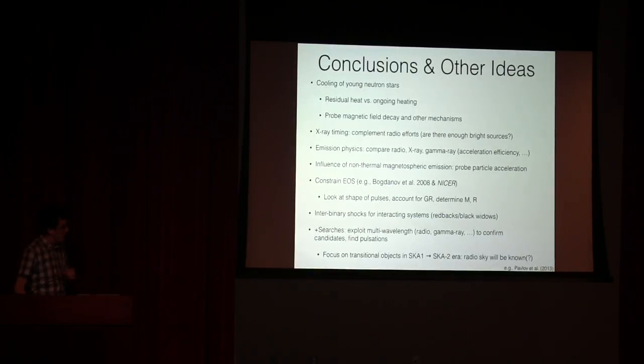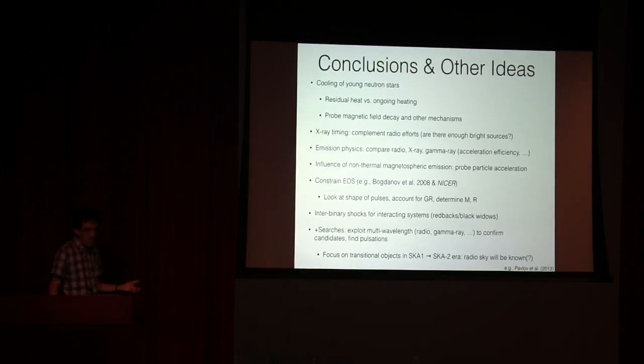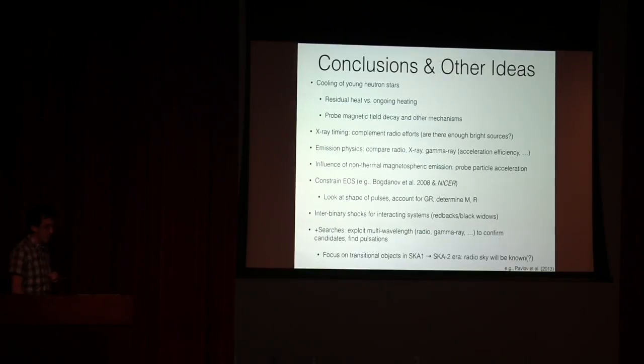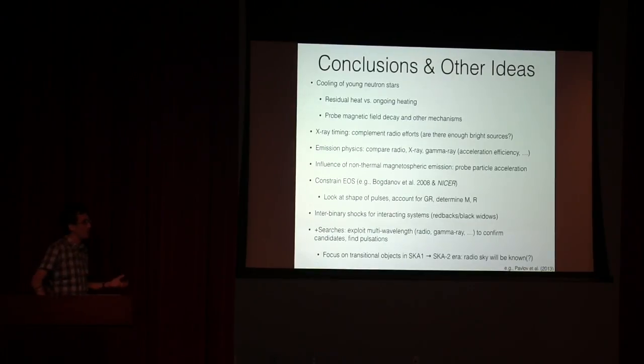I had a couple more slides on these objects, but I took them out and gave them to the talks earlier today. So I'll just conclude with just a list of other ideas, and there are many more ideas that a number of people have come up with. Just at the level of here are cool things we could do with pulsars if we had a whole lot more collecting area. Looking at the cooling of young neutron stars, understanding the residual heat versus ongoing heating from various mechanisms, magnetic field and otherwise, probe magnetic field decay, try to understand the microphysics. Will x-ray timing complement radio efforts? There may not be enough bright sources.